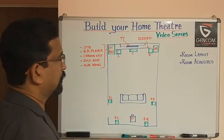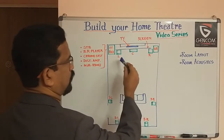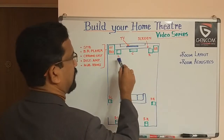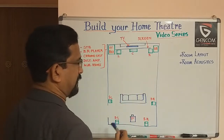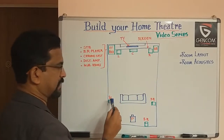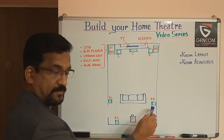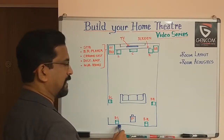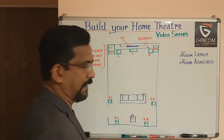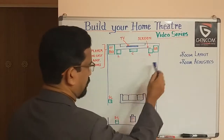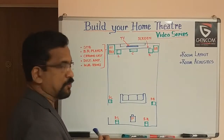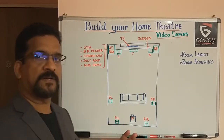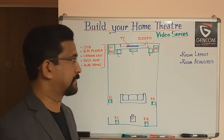Here in this room, in terms of speakers and audio output, we have left, center, and right. Then we have surround left, surround right, and we also have two more which are rear left and rear right. This makes up totally seven channels plus one which is a subwoofer. This is as far as the audio output is concerned.